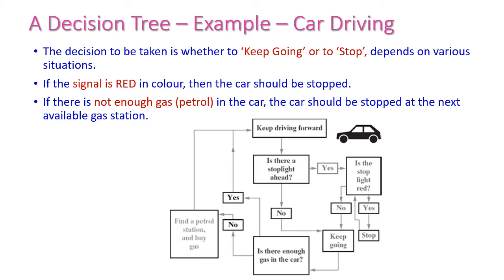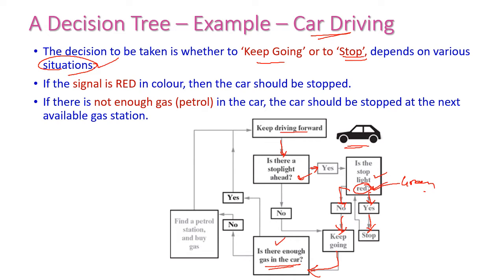Here is the car driving example for decision-making. Normally a car keeps driving forward, and whether to keep going or stop is based on various situations. While moving forward, we check: is there a stopping light ahead? If yes, we check whether the traffic signal light is red. If it is red, we stop and wait until it turns green. If it is not red, we keep going forward. While going, we check if enough gas is available. If yes, keep going forward; otherwise, find a petrol station to fill up, then go forward.